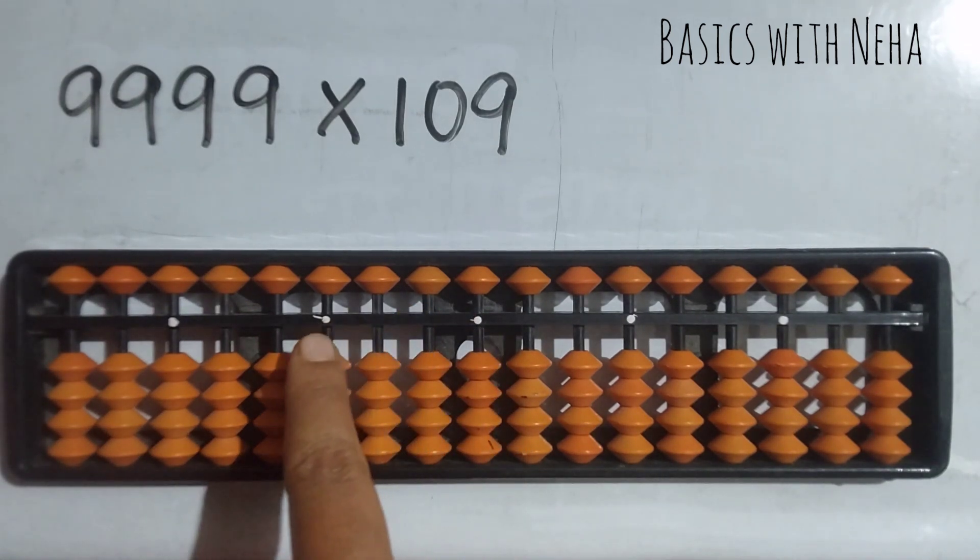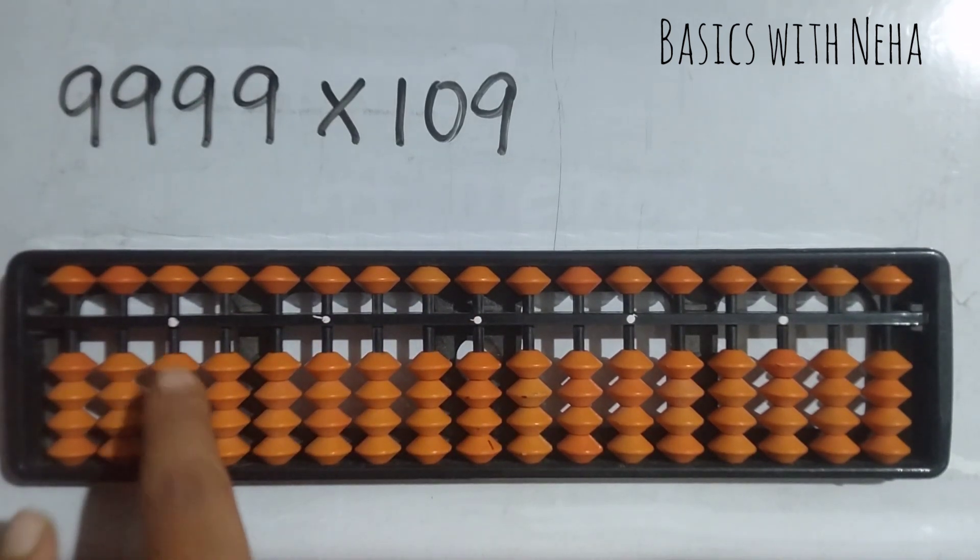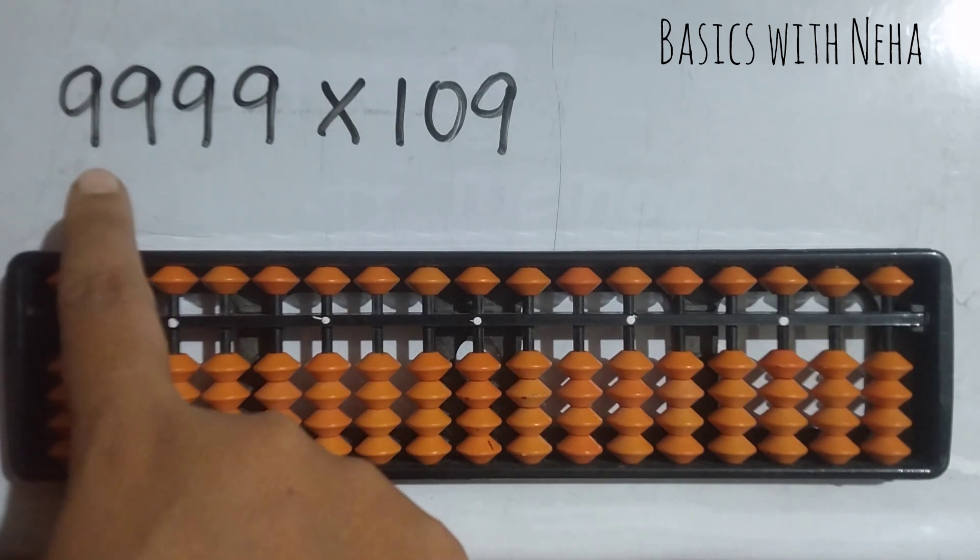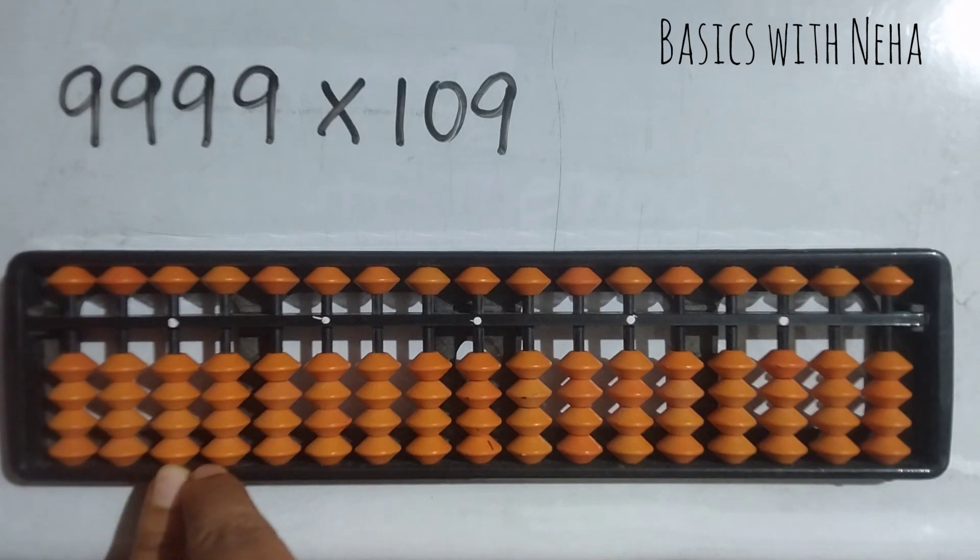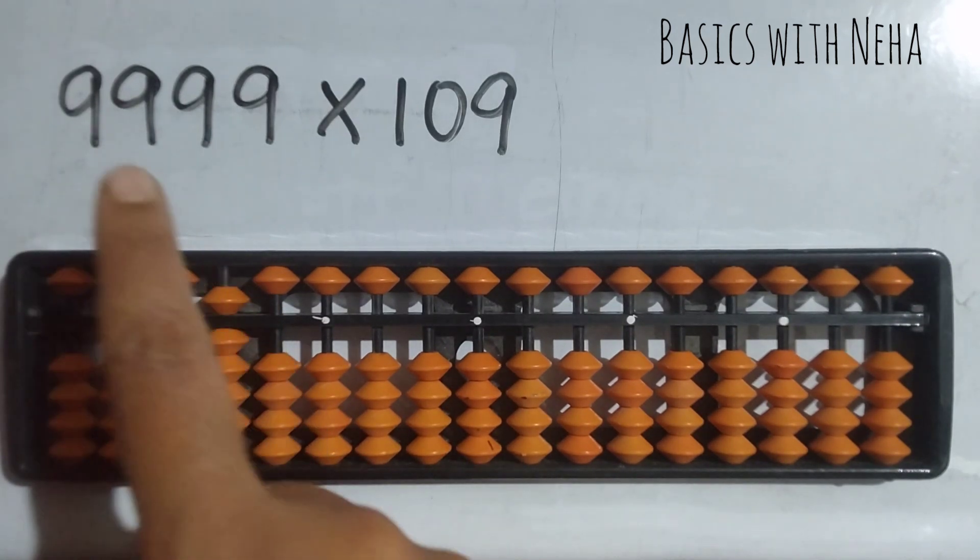Ones rod, one, two, three, four, five, six, seven. So my answer should start from this rod. Nine ones are nine. Any single digit number to be followed by zero, so it will be zero nine. Nine zeros are zero.